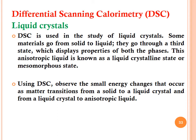DSC is used in the study of liquid crystals. Some materials go from solid to liquid through a third state that displays properties of both phases — this anisotropic liquid is known as the liquid crystalline or mesomorphous state. Using DSC, one can observe the small energy changes that occur as matter transitions from solid to liquid crystal and from liquid crystal to anisotropic liquid.